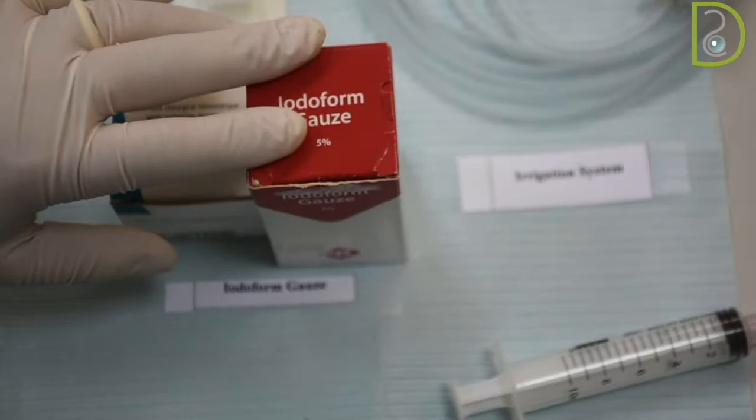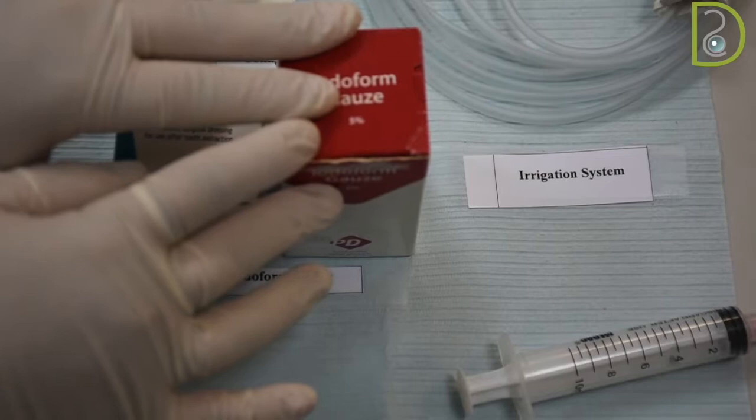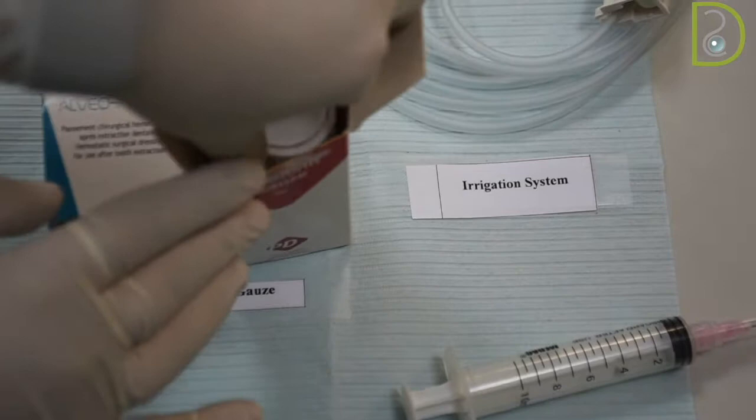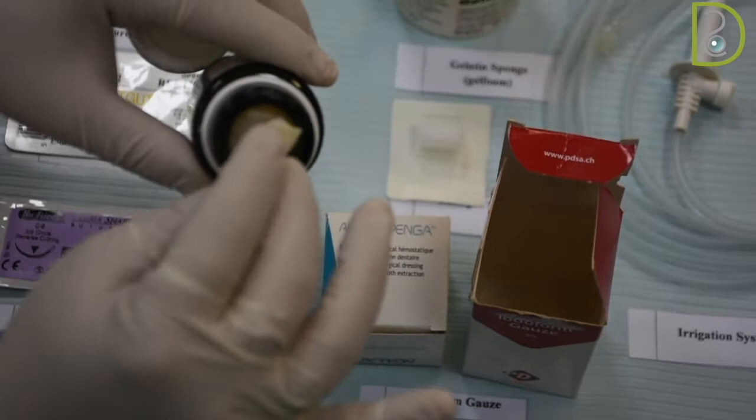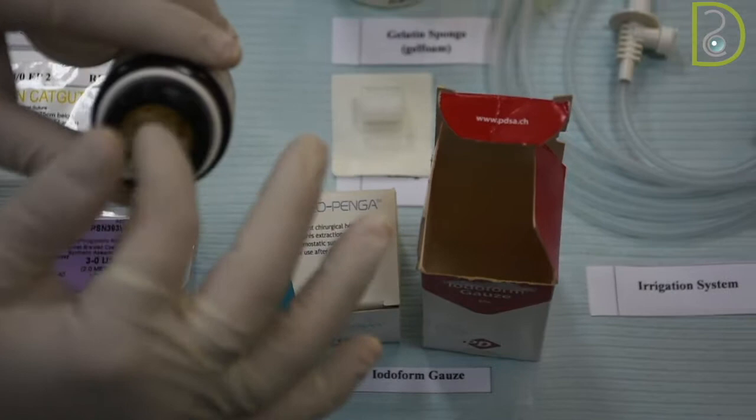We have iodiform. Iodiform is mainly an analgesic that will soothe the pain and also will act as a sterilizing agent along with the hemostasis. And it comes in different size, in different shapes. As here, it is a gauze. And this will be as a dressing to cover the wound or the socket. You can pull, cut a piece and put it inside the socket and immediately the iodiform will come into action by soothing the pain and sterilizing the area. And at the same time, you have to change this dressing.